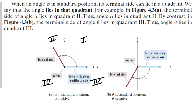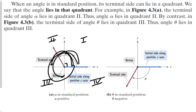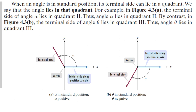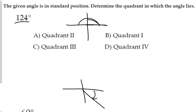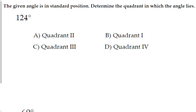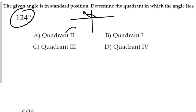Depending on how big the angle is, we can say which quadrant the terminal side would finish in. From the initial side, 90 degrees reaches the first quadrant boundary, 180 is all the way to the negative x-axis, 270, and all the way around the circle is 360 degrees. Given that an angle is in standard position, we can determine which quadrant it lies in. For example, a 124-degree angle would be in quadrant 2 because it falls somewhere between 90 and 180 degrees.